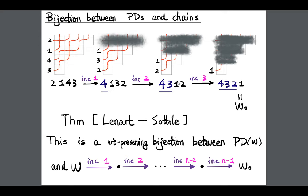Actually, my talk is about 2 + (n−1)! formulas for Schubert polynomials, because these chain formulas come in (n−1)! flavors. You grab your favorite permutation of n−1 — say 2, 1, 3 — and take chains in that order of labels (first an increasing 2-chain, then an increasing 1-chain, then an increasing 3-chain). Among these (n−1)! formulas, the one with labels 1, 2, 3 corresponds to pipe dreams, and the extreme with labels 3, 2, 1 corresponds to bumpless pipe dreams.